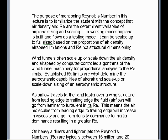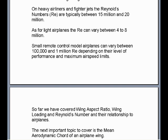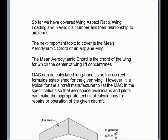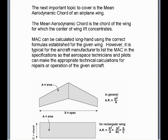Once you know the Reynolds number limit, you also know the maximum flight capabilities before turbulence exceeds the boundary layer capabilities. The boundary layer is the aeroelasticity around the airplane wing that keeps airflow on the wing so that speed, airflow, and pressure differentials can take place. On heavy airliners and fighter jets, the Reynolds number can typically be between 15 and 20 million at cruise flight. Lighter airplanes are about 4 to 8 million, and small remote control airplanes between 100,000 and 1 million. It depends on the air density, the length of the chord, and the speed the aircraft is flying.